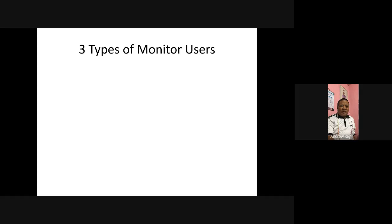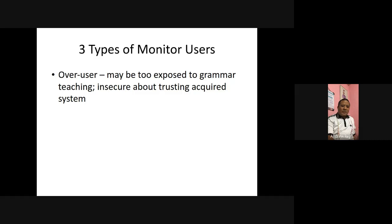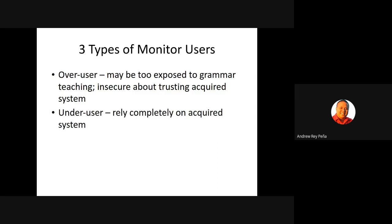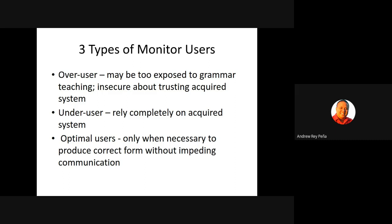Krashen talks about three types of monitor users. Over-users may be too exposed to grammar teaching and are insecure about trusting their acquired system — an example given is Japanese speakers, who speak English slowly trying to produce correct sentences. Under-users rely completely on the acquired system — an example given is Latinos, who don't focus on form and keep talking. And then there are optimal users, who use the monitor only when necessary to produce correct form without impeding communication.